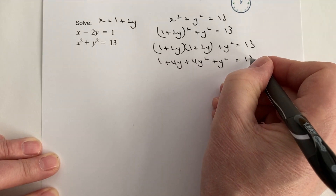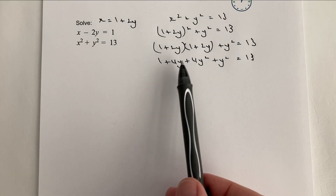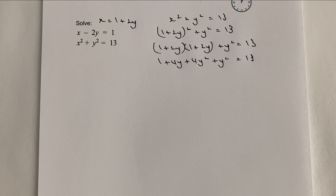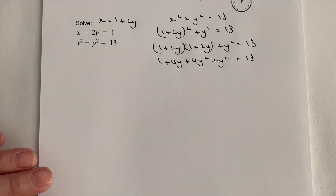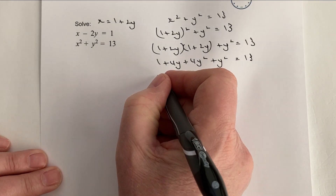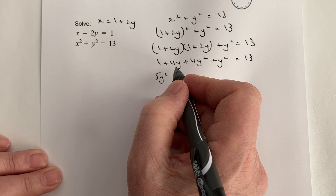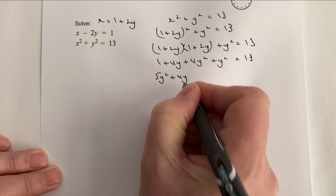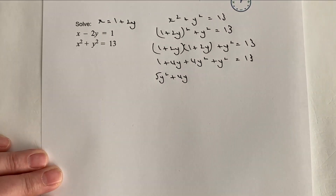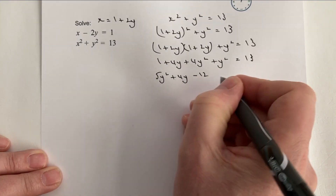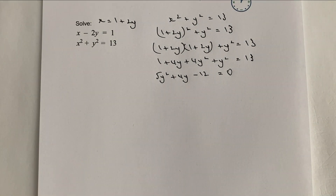If you're not sure about how I've expanded that, please have a look at some of the other playlists on expanding quadratics. Now we're going to gather the like terms: I've got 5y² + 4y, and bringing the 13 over gives 1 − 13 = −12, so we get 5y² + 4y − 12 = 0.